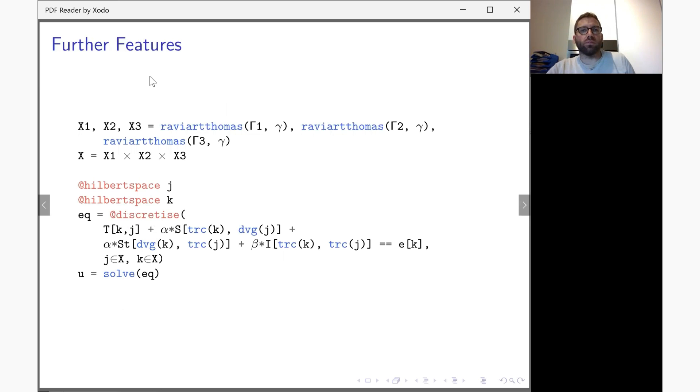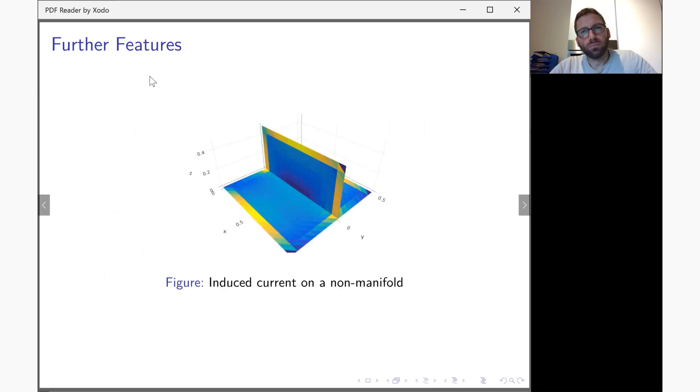If you have a domain decomposition method where the equation is fixed but the geometric configuration changes, then you can rely on a different feature of BEAST, which is the definition of finite element spaces as direct products of more atomic finite element spaces. That is something that is demonstrated here. This is the case of multiple sheets that meet along a junction. In the equation, there is a term that acts as an interior penalty.